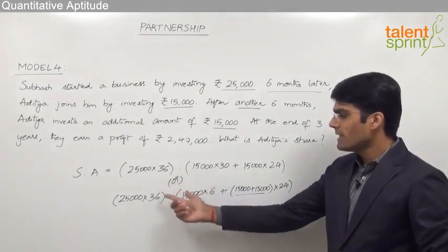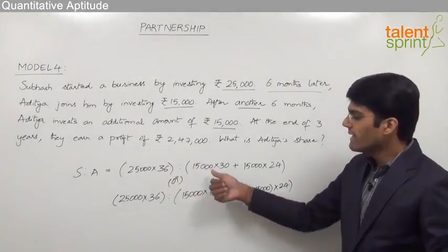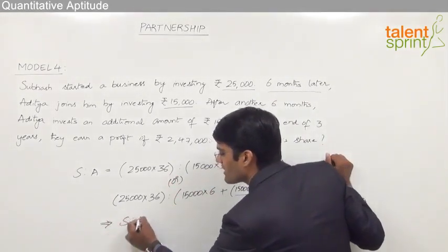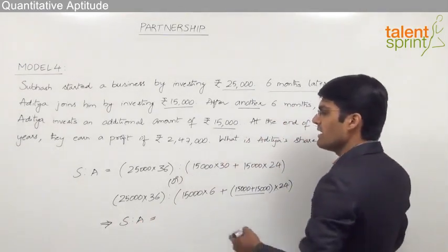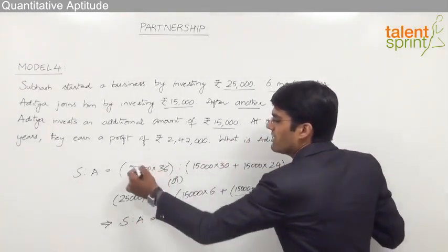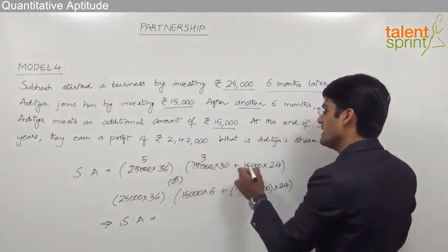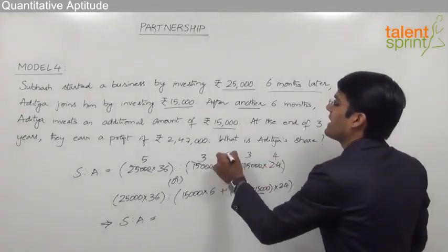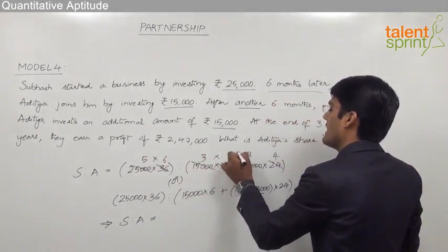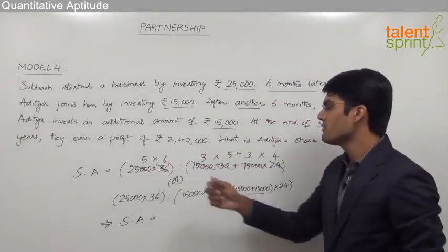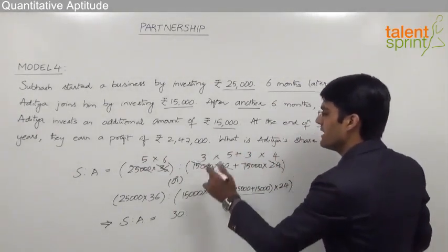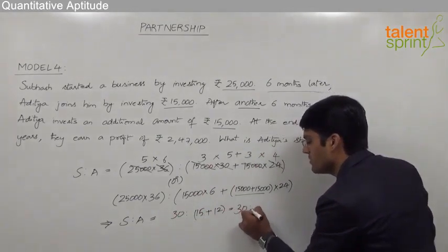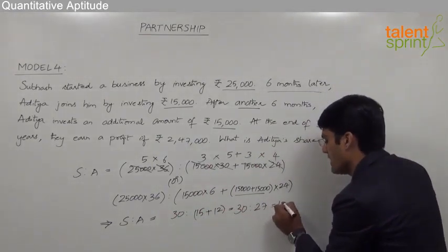Both methods give the same ratio. Simplifying: taking 5,000 common and 6 common, the ratio of Subhash to Aditya is 5 into 6 to 3 into 5 plus 3 into 4, which is 30 to 15 plus 12, that is 30 to 27, or simplified to 10 is to 9.